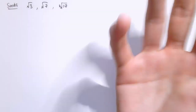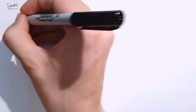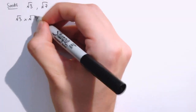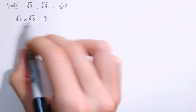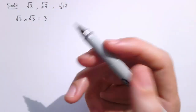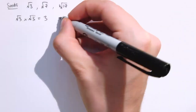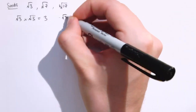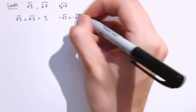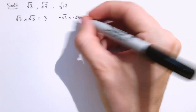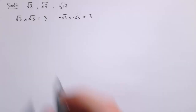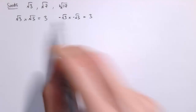At risk of stating the obvious, the square root of a number — for example the square root of 3 — is a number that when you multiply it by itself you get that number. So the square root of 3 times the square root of 3 is 3. One of the first things we notice is that there are two square roots of 3, because minus the square root of 3 times minus the square root of 3 — two minuses multiplied give a plus — also gives plus 3. So there are two square roots of 3.